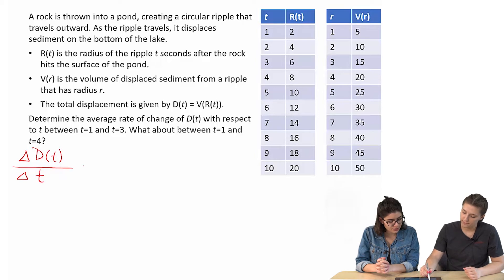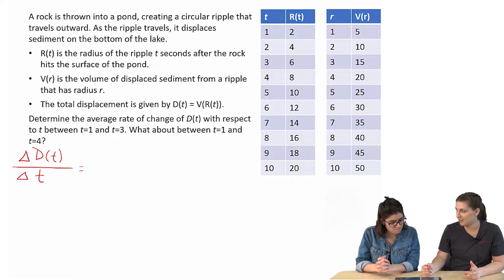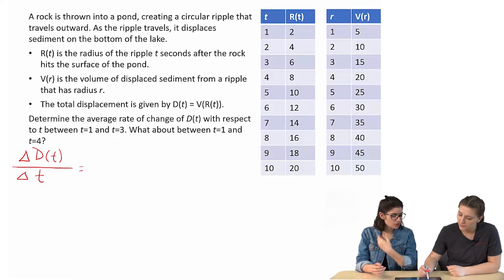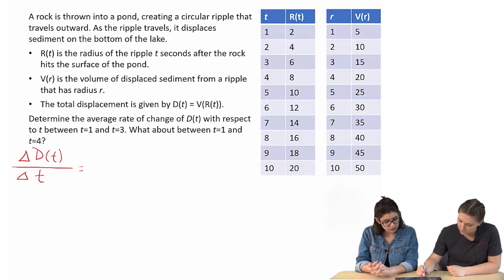Okay. So I feel like we have a lot of information. Maybe we should just try to fill out the formula and see how it goes. Yeah. Okay. So you want to do the first one between 1 and 3? Yeah, between t equals 1 and t equals 3.